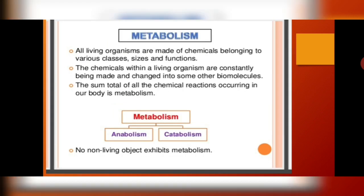The next phenomenon we need to discuss is metabolism. All living organisms are made of chemicals. There are certain chemicals belonging to various classes, sizes, and functions — we have already covered these: carbohydrates, fats, proteins, vitamins, various minerals, DNA. All these are your basic chemicals. The chemicals within living organisms are constantly being made and constantly being broken down. The sum total of all these reactions is known as metabolism.